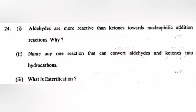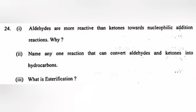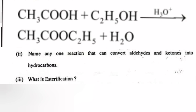Part 2: Name any one reaction that can convert aldehyde and ketones into hydrocarbons. Answer: Clemmensen reduction or Wolff-Kishner reduction. Part 3: What is esterification? Answer: Alcohols react with carboxylic acid and their derivatives in the presence of a few drops mineral acid to form esters. CH3COOH plus C2H5OH gives CH3COOC2H5 plus H2O.